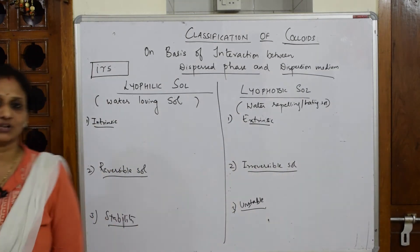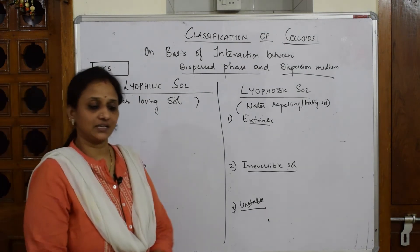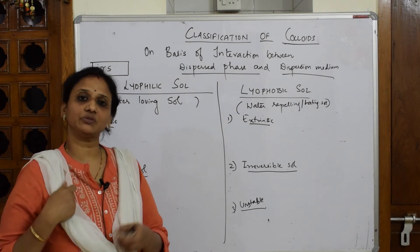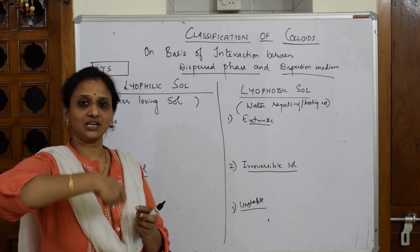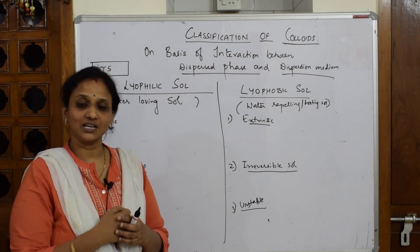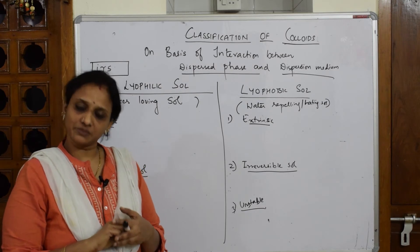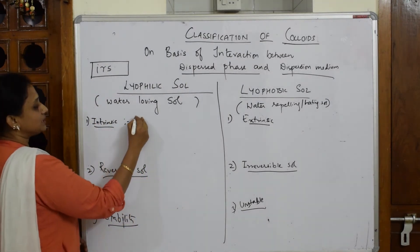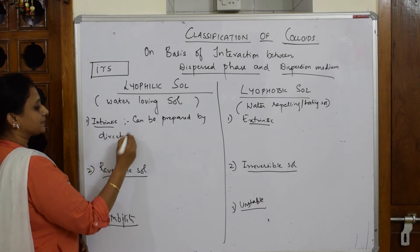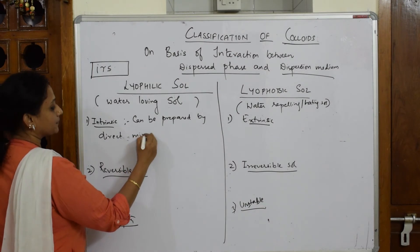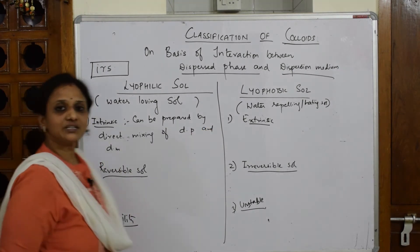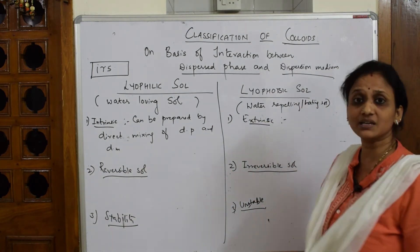Intrinsic means that when I take the dispersed phase and dispersion medium — for example, starch — I take starch powder, mix it thoroughly with water in a china dish, heat it while stirring with a glass rod, cool it, and filter it. This is direct mixing of the dispersed phase and dispersion medium, which is why lyophilic sols are called Intrinsic — they can be prepared by direct mixing of dispersed phase and dispersion medium.